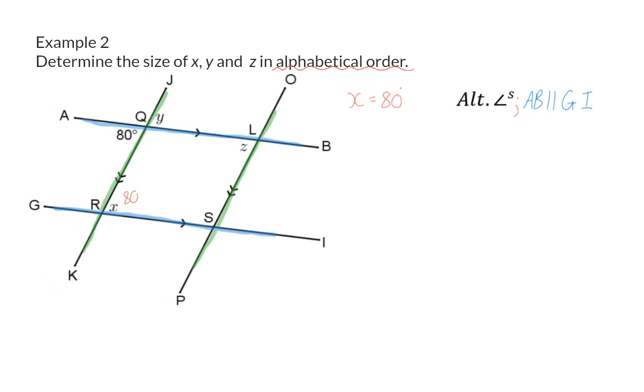As we now continue to angle Y you will realize that the more properties you know the more options you will have to determine the same angle. For angle Y you could have chosen to say that angle Y is vertically opposite and that means 80 degrees. Or you could have seen that if you use the parallel lines you can form an upside down F which means we have corresponding angles with angle X and then Y is also 80. I'm going to choose to write down Y is equal to 80 and supply the reason vertically opposite angles.